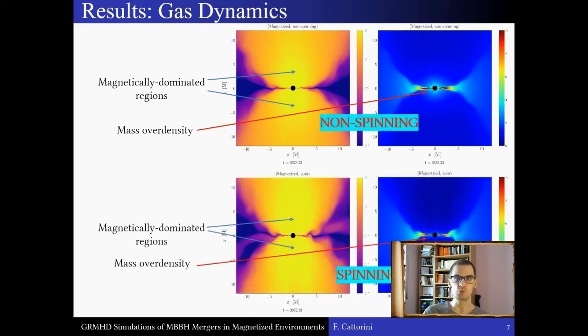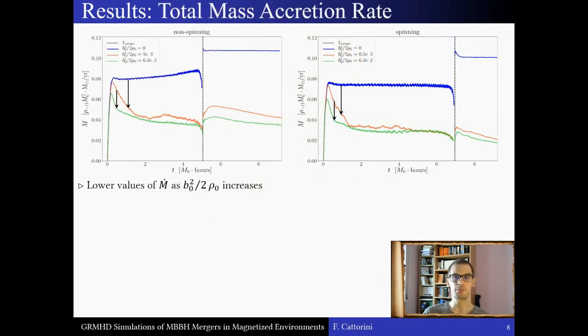So, for each binary evolution, we measured the total mass accretion rate on all the horizons, and in these plots, we see the values of m dot as a function of time across the whole evolutions, for the non-spinning on the left and the spinning on the right. So, we label our runs with the initial value of the magnetic to rest mass energy density ratio, and the black vertical dashed lines mark the coalescence time. So, as you can see, the spin has little to no effect on the mass accretion rate.